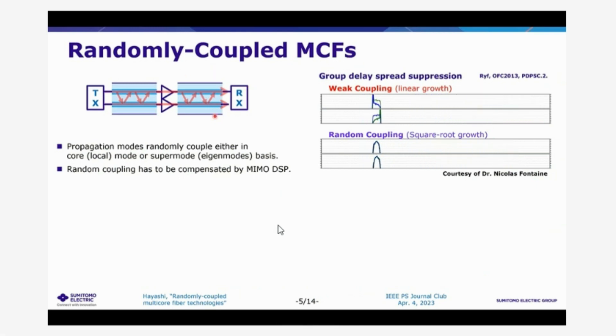The randomly coupled multicore fiber is most promising fiber for very high density, very long-haul, high capacity optical fiber transmission. In this kind of fiber propagation modes, randomly coupled either in the core mode or super mode basis. And such a random coupling has to be compensated by MIMO DSP.